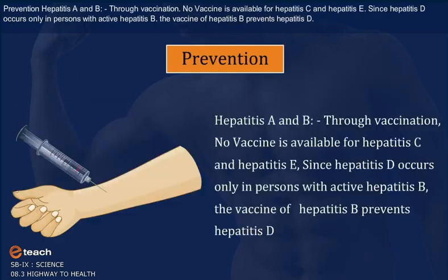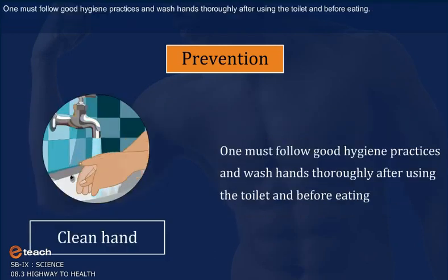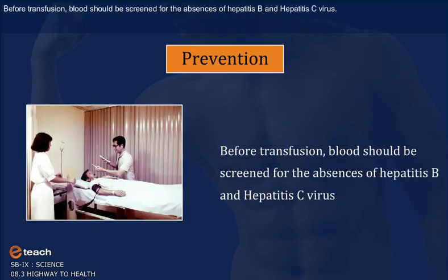Prevention: Hepatitis A and B can be prevented through vaccination. No vaccine is available for hepatitis C and hepatitis E. Since hepatitis D occurs only in persons with active hepatitis B, the vaccine for hepatitis B also prevents hepatitis D. One must follow good hygienic practices and wash hands thoroughly after using the toilet and before eating. Before transfusion, blood should be screened for the absence of hepatitis B and C virus.